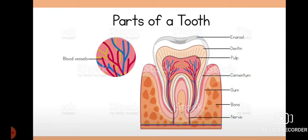For adults there are 32 teeth in total. There are 28 permanent teeth, and 4 are the wisdom teeth, which grow between the ages of 17 and 21 at the back of the mouth. So 28 plus 4 gives a total of 32 adult teeth.